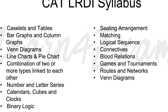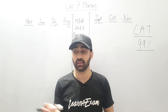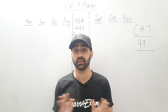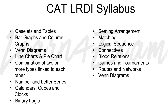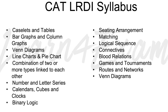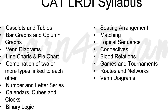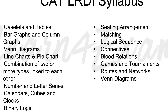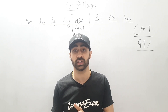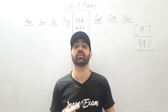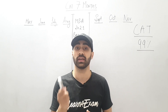You can take a screenshot as well — all the topics are right here, easily available. Under LRDI you have major topics like sitting arrangement, circular sitting arrangement, linear sitting arrangement, ranking, distribution, selection, games and tournaments, routes and networks. These topics form the bulk of what comes in LRDI — Logical Reasoning and Data Interpretation.